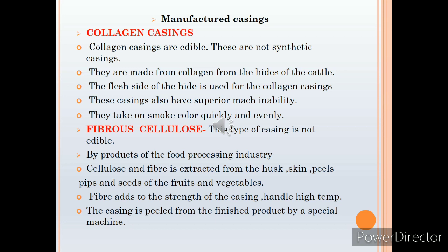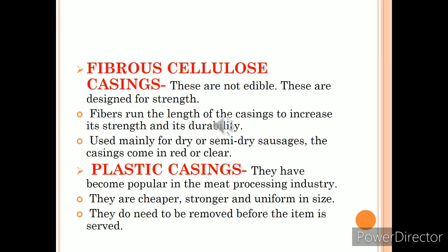Then we have fibrous cellulose casing, which is a byproduct of the food processing industry. Cellulose and fiber are used for making this type of casing — the fiber gives it strength, and the casing is generally peeled from the finished product; it is not edible. Fibrous cellulose casing is also not edible; the fiber runs the length of the casing to increase its strength, and it is used mainly for dry or semi-dry sausages like salamis.